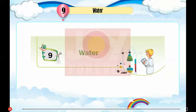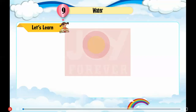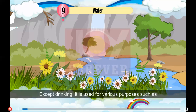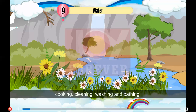Chapter 9: Water. Let's learn. Water is one of the most important things needed to live. Except drinking, it is used for various purposes such as cooking, cleaning, washing and bathing.